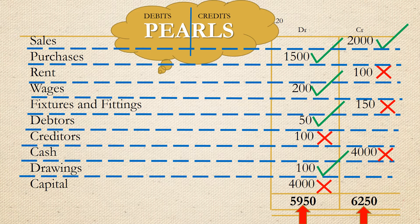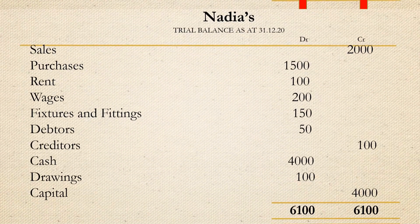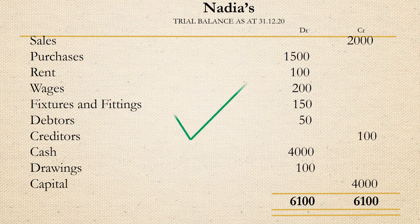After identifying all the errors, we are now going to draw a corrected trial balance. After making the adjustments, the debit and credit balances are now equal.